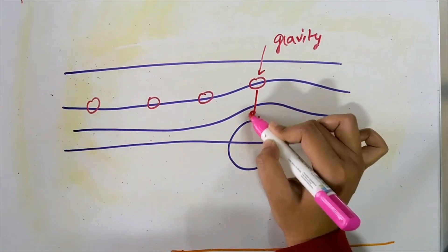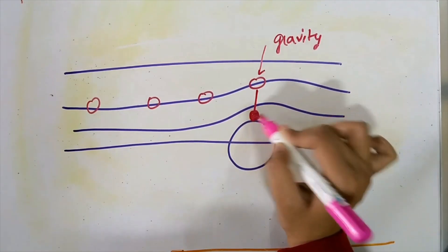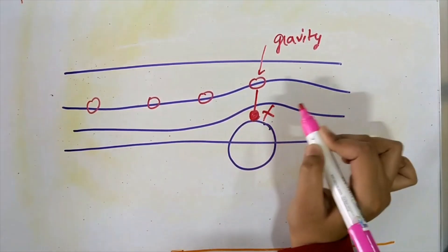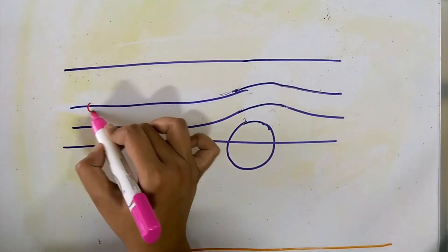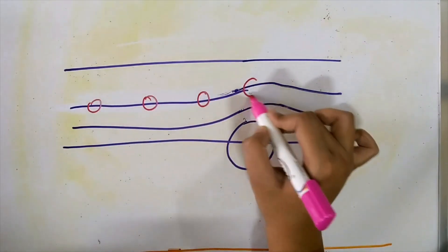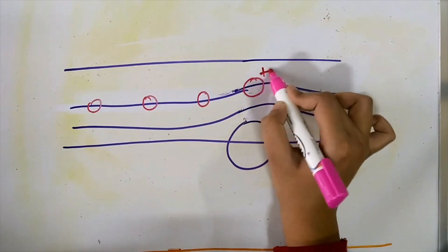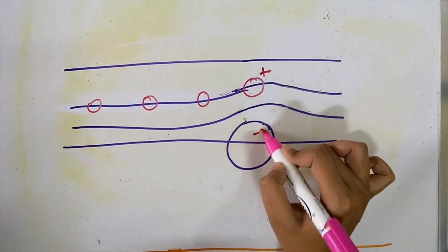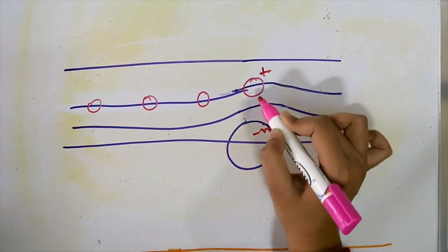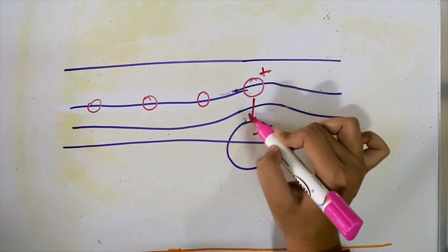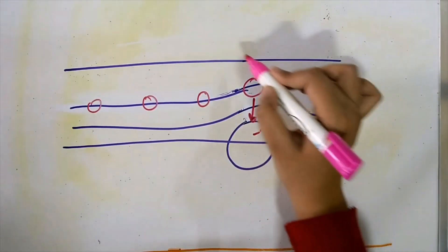Now the last mechanism. Suppose your particle is positively charged and the fiber is negatively charged. The particle will be drawn to the fiber because of electrostatic attraction.